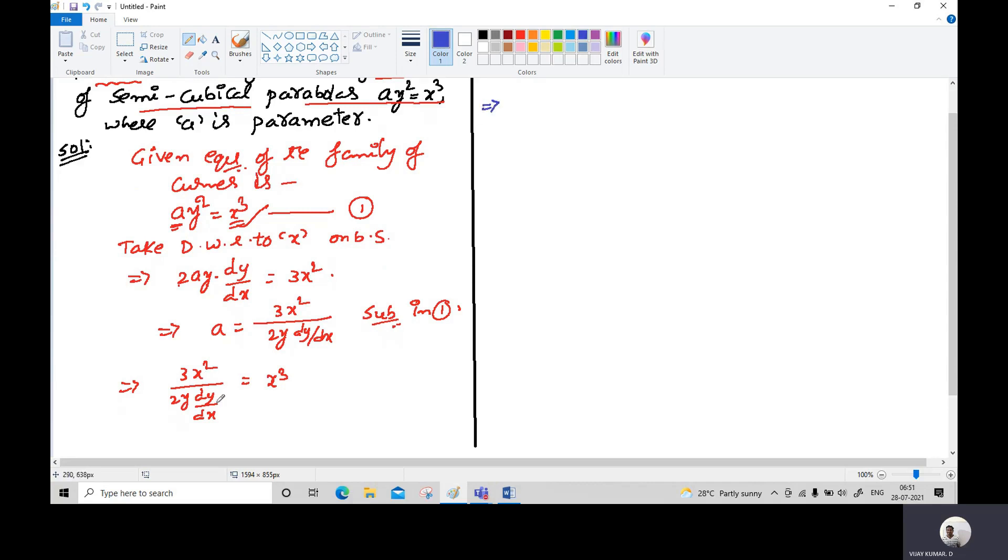From this, remember we have y² here. So one y gets cancelled, x² gets cancelled, and the remaining term is 3y/2·dy/dx equals x.